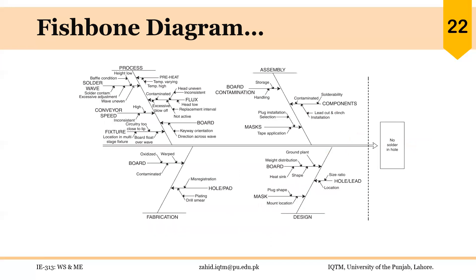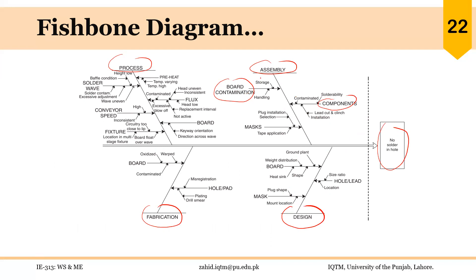Here is an example. The problem or effect — 'no solder in-hole' — is written on the right side, and the major categories of causes are identified after discussion: process, assembly, fabrication, and design. In assembly, the problem could be related to board contamination or components. Two major sub-causes related to board contamination are storage and handling of the board. These two can cause board contamination that eventually affects the assembly and ultimately leads to the problem of no solder in-hole.